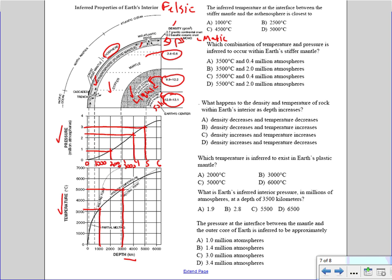Now let's go through the problems. The inferred temperature at the interface — anytime you see 'interface,' it refers to the boundary — between the stiffer mantle and the asthenosphere. You go to that boundary, then go down to the temperature curve, read across, and it's somewhere close to 3,000. Looking at the choices, the best answer is choice B: 2,500 degrees Celsius.